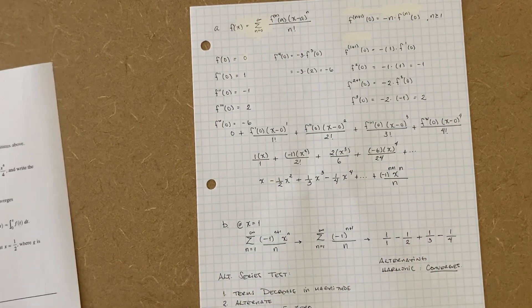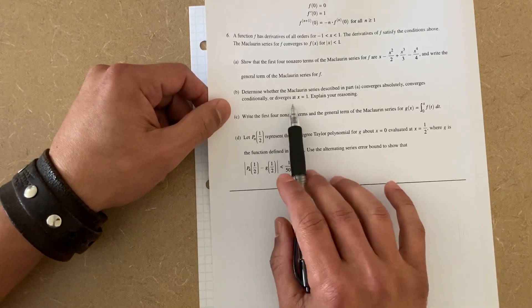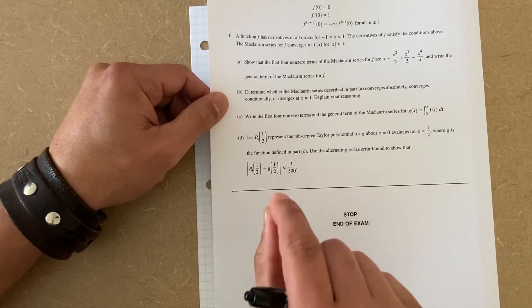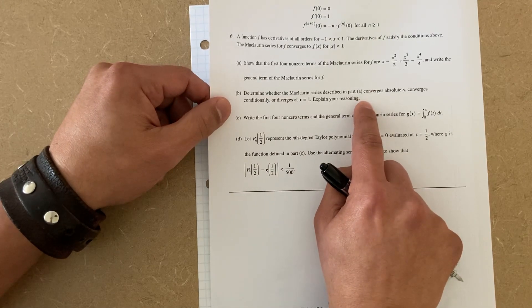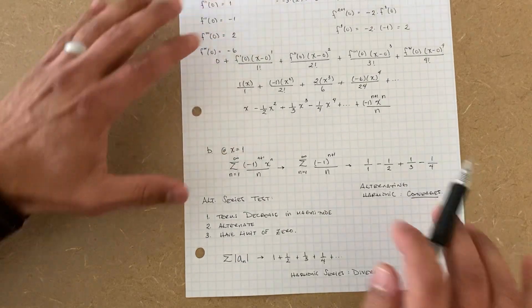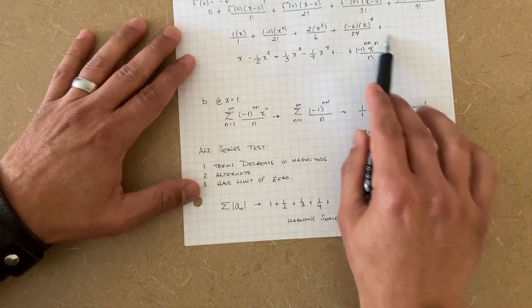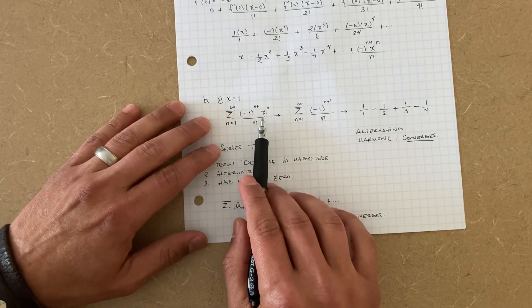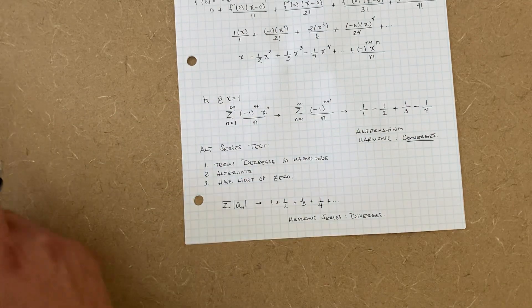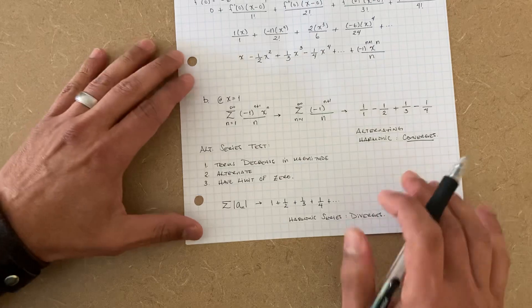Now let's do part B: determine whether the Maclaurin series described in part A converges absolutely, converges conditionally, or diverges at x equals one. They're pinpointing to a specific point and asking about convergence — radius of convergence, whether it's absolute or conditional. Now that we have our polynomial, they're centering about x equals one. We have our general equation and we plug in x equals one. To determine if it converges absolutely, conditionally, or diverges, we have to apply the alternating series test.